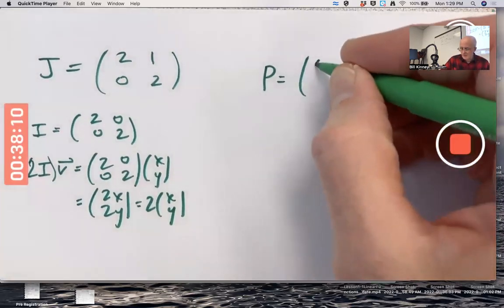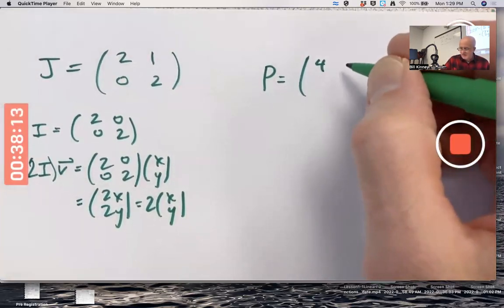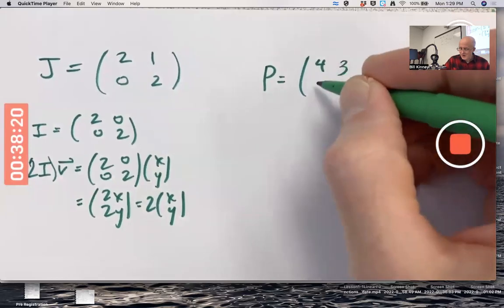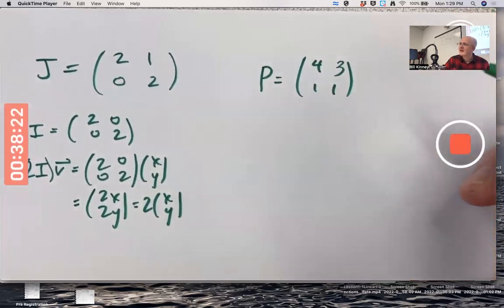Oh, I could pick, say, four. Wait, wait, I want to pick her. When I have a determinant of one. Four, three, one, one has a determinant of one. Okay.